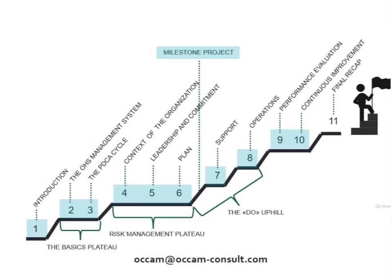With this chapter we have almost ended our course. We learned how to seek continuous improvement through the basic tools of the management system — specifically, the key role of recording negative events, nonconformities, and planning an adequate response to them. With this chapter we covered all the contents of the ISO 45001 standard. The following chapter is just a brief recap of the documents needed to build your 45001 system. If you need help or have any questions, please send us an email at occam@occam-consult.com.